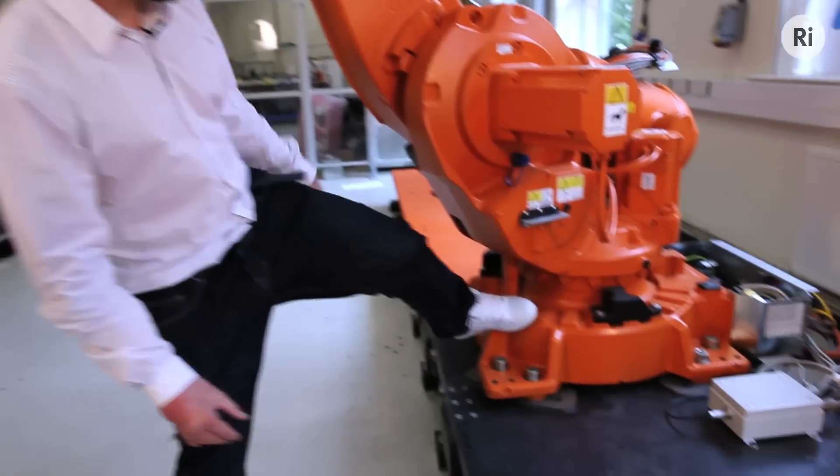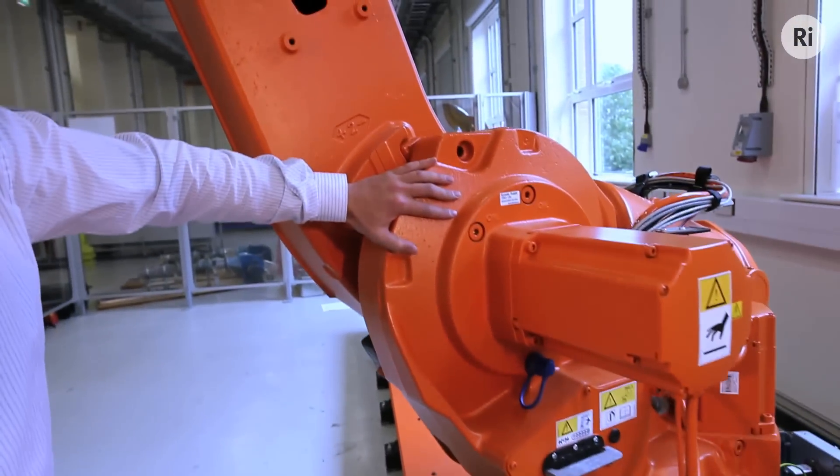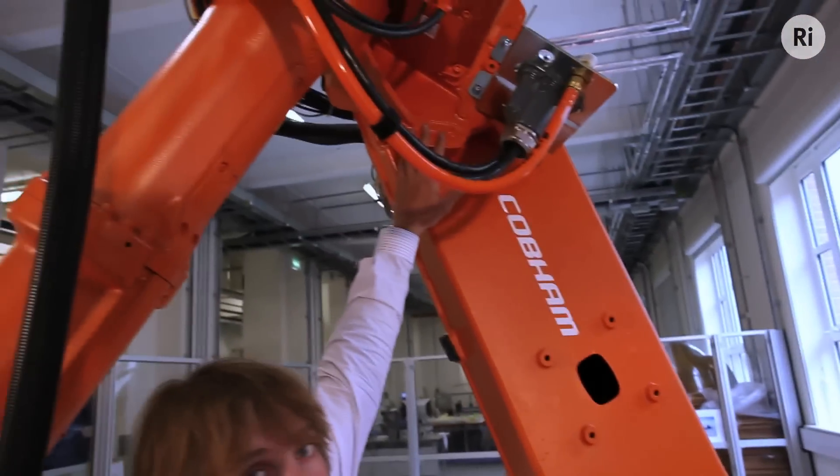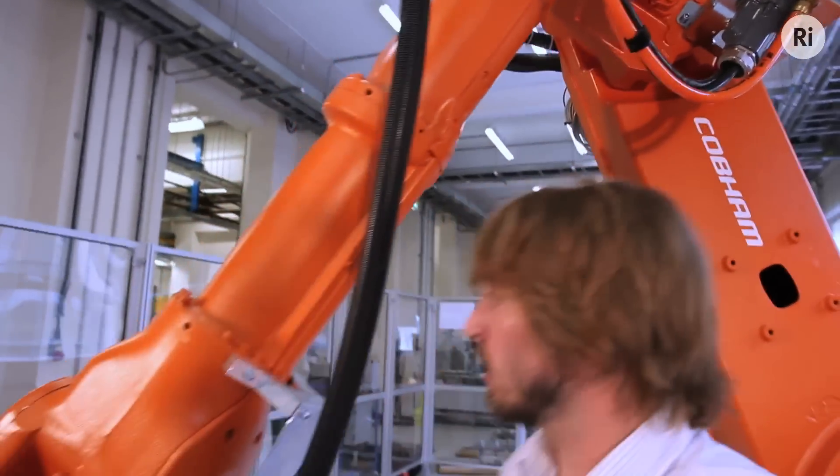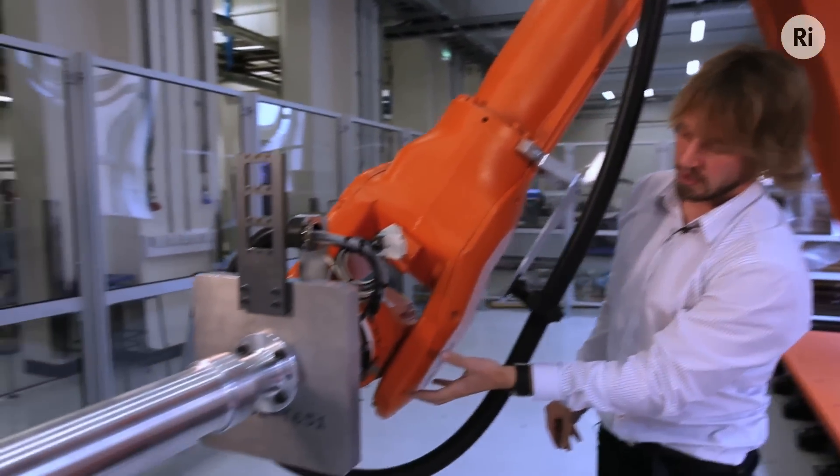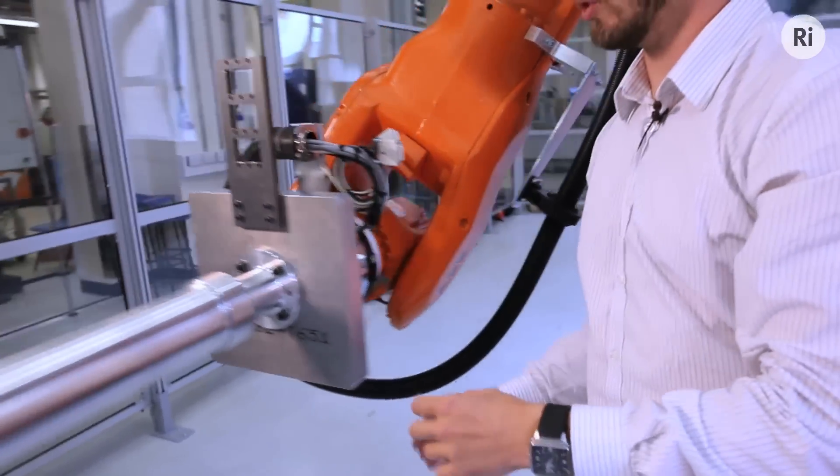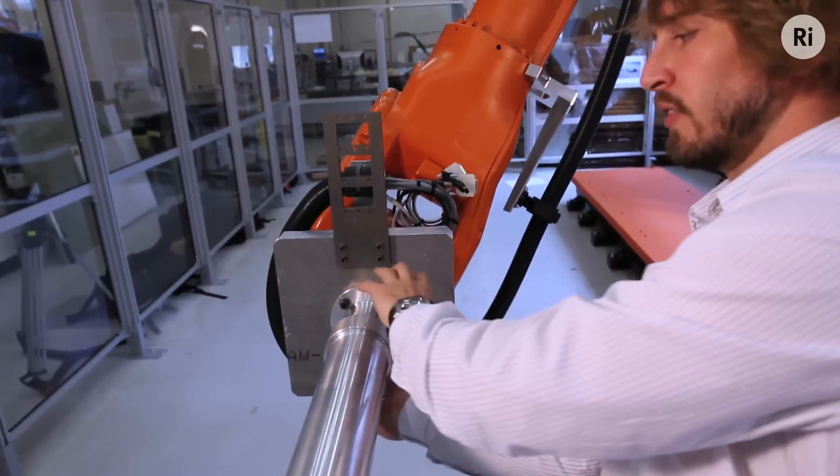The first joint is at the base here, which allows the whole robot to swivel around there. The second joint is here. The third joint is up at the elbow. The fourth joint is about the axis of the forearm here. The fifth joint is the wrist, rotating here. And then the sixth joint is around the end effector here.